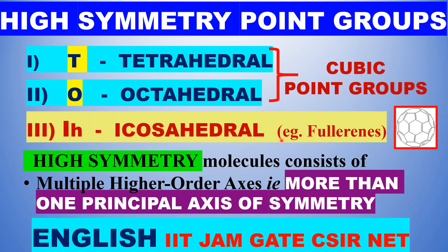For example, in ammonia, C3 is the principal axis of symmetry and it occurs only one type — only once. Whereas in very high symmetry point groups, the principal axis of symmetry is present more than once.